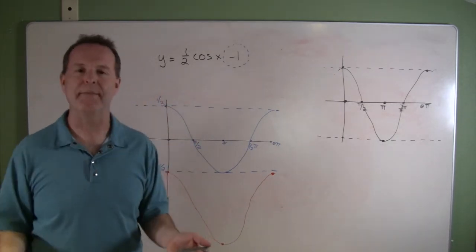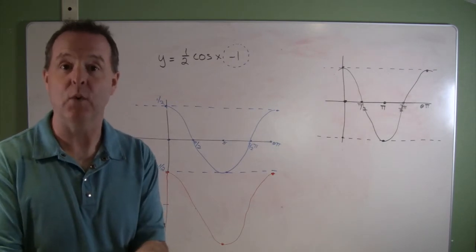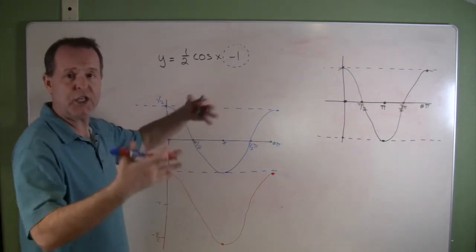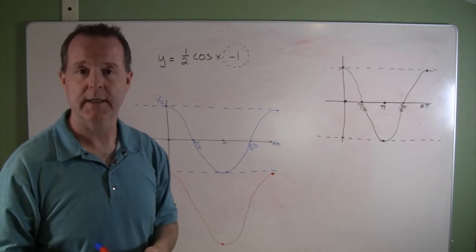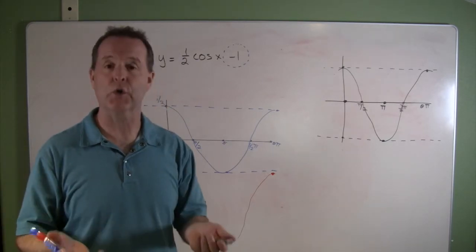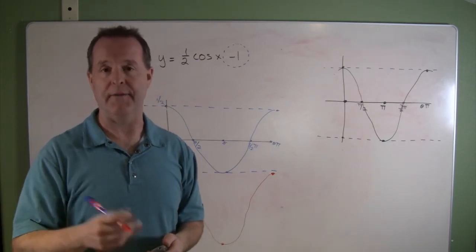All right. I tried my best there, but I hope you get the idea of what was going on. It was taking this graph and just shifting it down one unit, and that's how we can deal with some vertical shifting in our graph that we have.